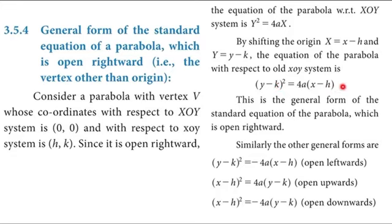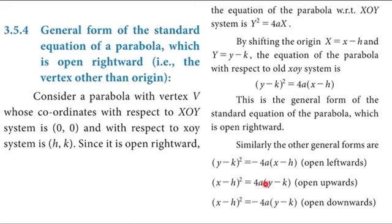Instead of y we write y − k and instead of x we write x − h, because the vertex is at point (h, k). The other general forms: if open leftward, (y − k)² = −4a(x − h). If open upwards, (x − h)² = 4a(y − k). If open downwards, (x − h)² = −4a(y − k).